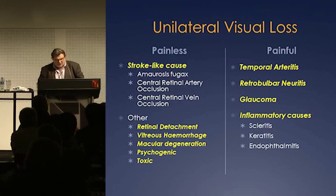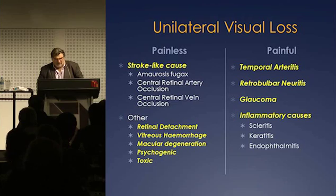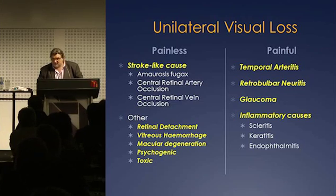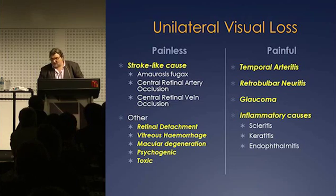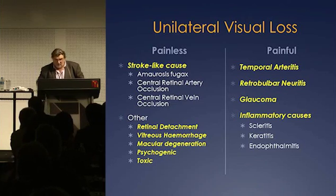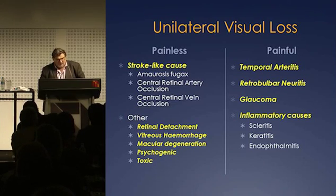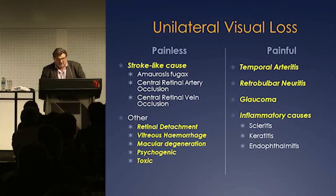Just going back — bilateral visual loss is probably going to be something else. You can have bilateral temporal arteritis if you're predisposed to vasculitic diseases, though you'd be a bit unlucky. Toxic causes like methanol are another option — we used to see people come in and go blind, but we don't see that much now. Or you can have a bilateral occipital infarct, which would also be unlucky. But we'll just talk about unilateral.